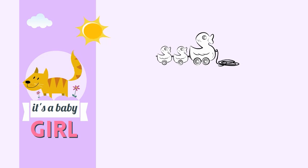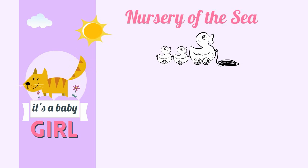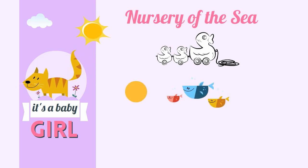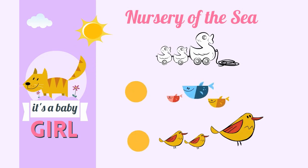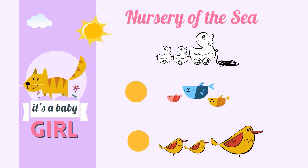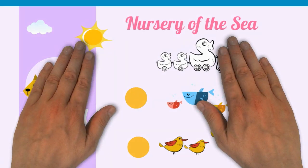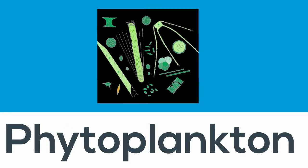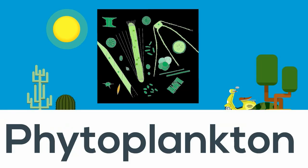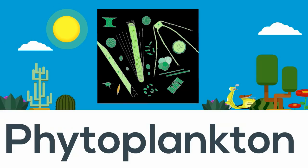Estuaries have been called the nurseries of the sea because they provide a safe environment for fish, birds, and other wildlife to raise their young. Estuaries also have producers called phytoplankton, which help the food chain and provide food for many of the wildlife.